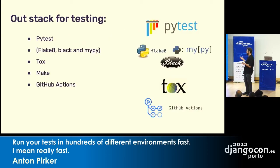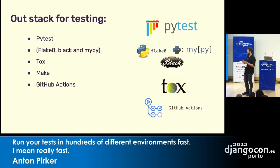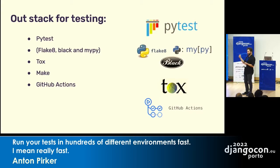How do we run this? Our stack for testing is the default stack for everyone: PyTest for running the tests, flake8, black, and mypy for type checking and linting. Then we use Tox to run our test suite in the different environments — it creates virtual environments for each Python version and framework version and runs PyTest in it. We use Make for running tests locally, and GitHub Actions as our CI provider, running all tests on each pull request or merge into main.